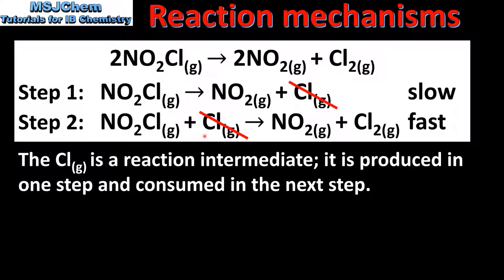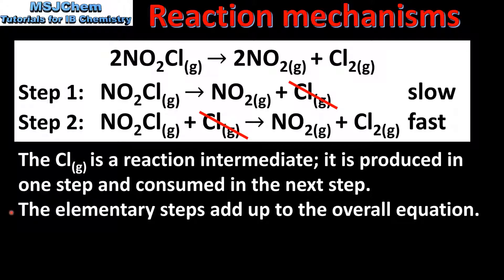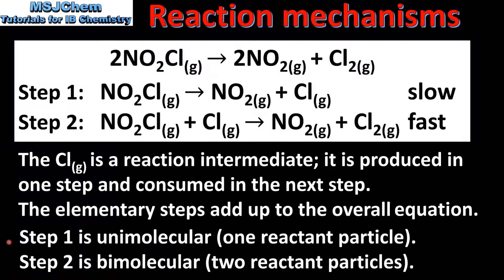Reaction intermediates do not appear in the overall equation, therefore they cancel out. We are now left with 2 NO2Cl in the reactants and 2 NO2 and 1 Cl2 in the products. So from this we can see that the elementary steps add up to the overall equation. Next we look at the molecularity of each elementary step. Step 1 is unimolecular with 1 reactant particle, and step 2 is bimolecular with 2 reactant particles. Therefore both elementary steps are probable.